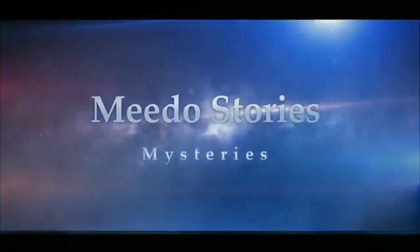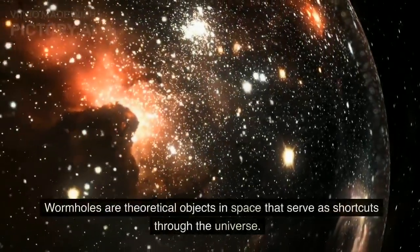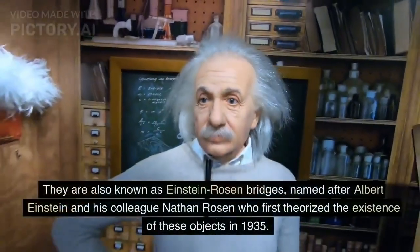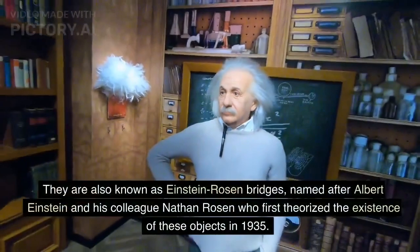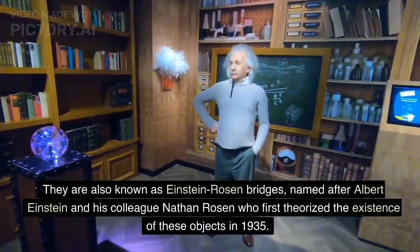The Mysteries of the Wormholes. Wormholes are theoretical objects in space that serve as shortcuts through the universe. They are also known as Einstein-Rosen bridges, named after Albert Einstein and his colleague Nathan Rosen who first theorized the existence of these objects in 1935.